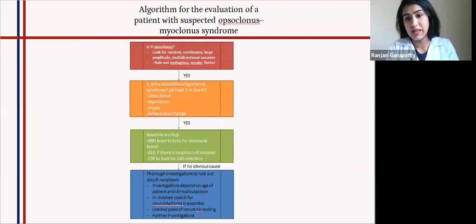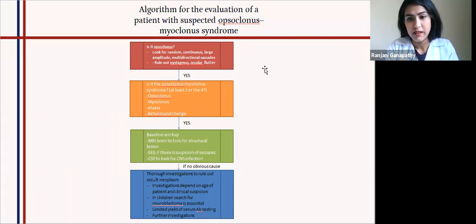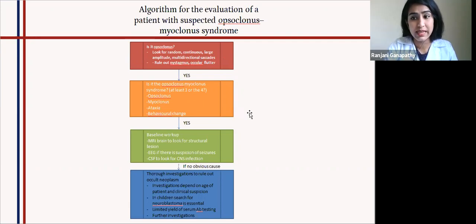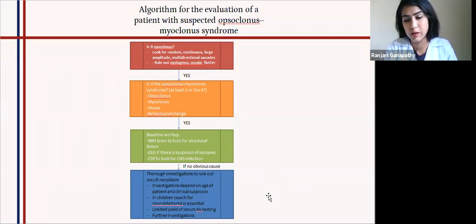This is the algorithm for evaluating a patient when we suspect opsoclonus-myoclonus syndrome. First, we need to confirm whether it really is opsoclonus — do we see random, continuous, large-amplitude saccades? If we do, we move to the next step: checking whether at least three or four of the criteria are fulfilled — opsoclonus, myoclonus, ataxia, and behavioral changes. If at least three are present, then we know what we have and the task is to find the etiology. We do MRI, EEG, and CSF checks, and if those are unrevealing, we investigate for something paraneoplastic with a PET scan.